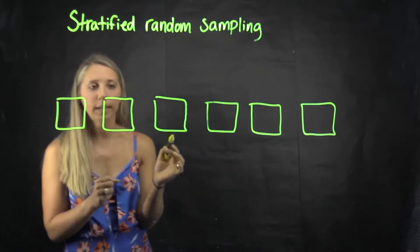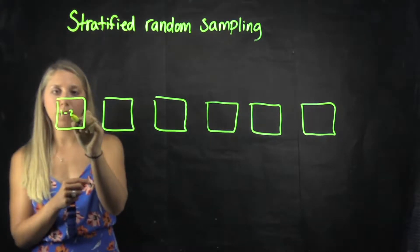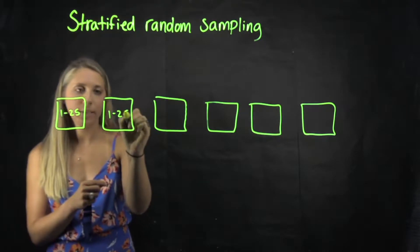And I'm going to number, let's for ease's sake, let's say that there are students and they each have a number 1 through 25 in each room.